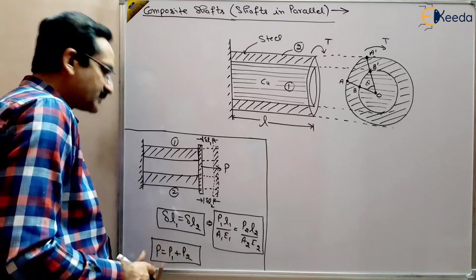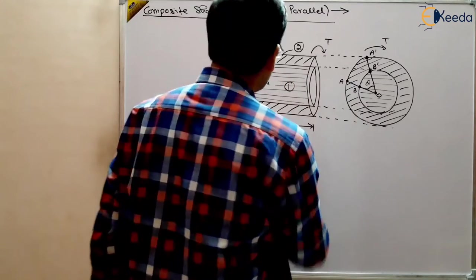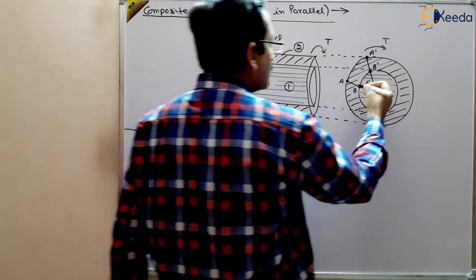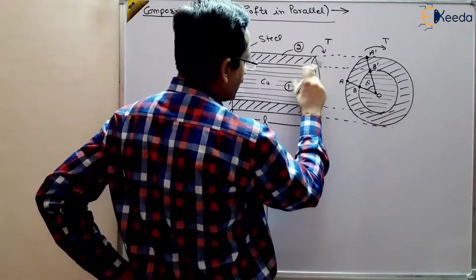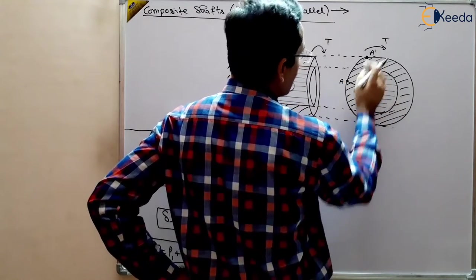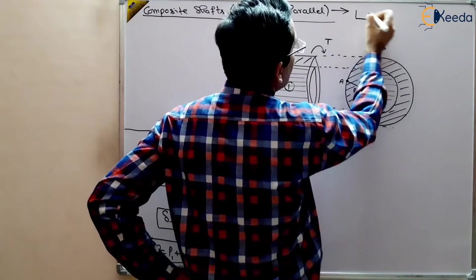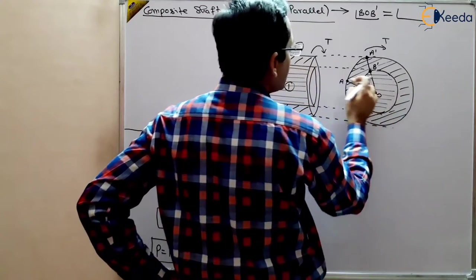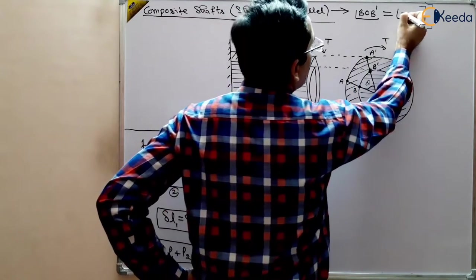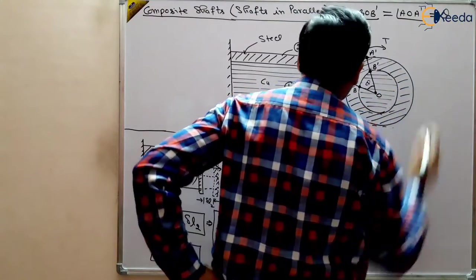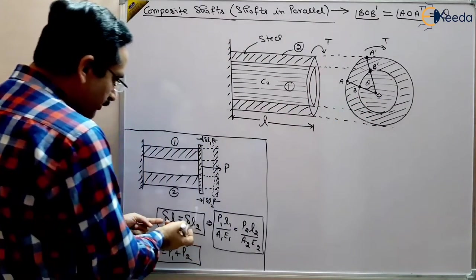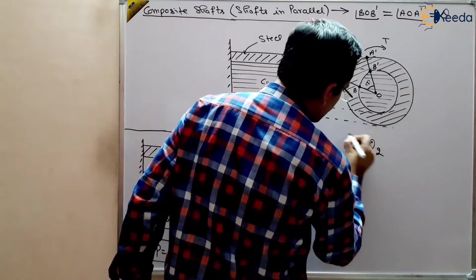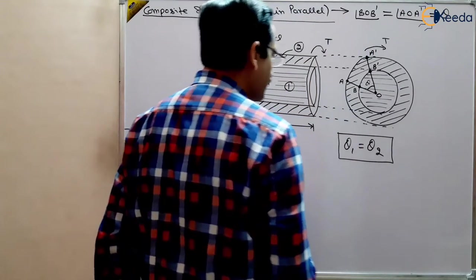The same case applies here — one material is copper and the other is steel. You can see that the angle of twist of the inner shaft equals the angle of twist of the outer shaft: angle B-O-B-dash equals angle A-O-A-dash, and both equal theta. So the angle of twist of the outer shaft is the same as the inner shaft, similar to how the deformation for both bars was the same in the direct loading case.